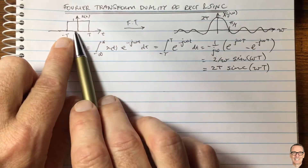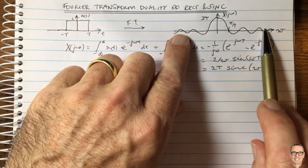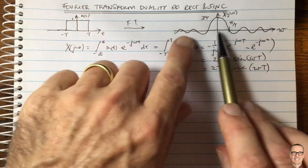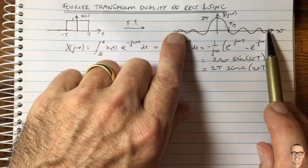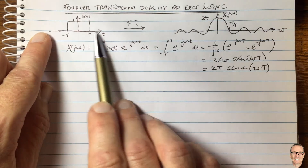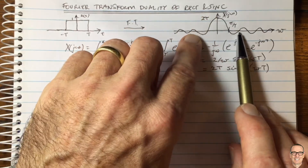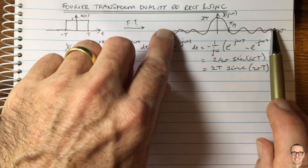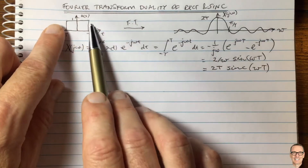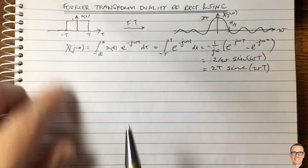So this is the relationship: the square function in the time domain has a Fourier transform that is a sinc function in the frequency domain. If we want a signal to turn on and off sharply, we need significant bandwidth, and technically we need infinite bandwidth for a perfectly sharp transition.